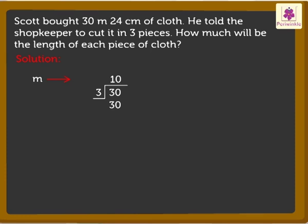Further, write 30 below the dividend 30. On subtracting these numbers, we get the final remainder 0.